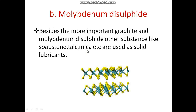Here you can see the structure of molybdenum disulfide — the yellow color represents sulfur and the blue color represents molybdenum. This concludes our discussion on solid lubricants covering graphite and molybdenum disulfide. Thank you.